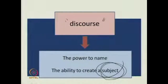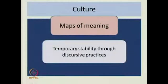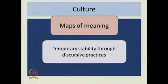So we talk about subjectivity as the topic of the first lecture in module 2. Module 2 is devoted to key concepts. Culture as maps of meaning was seen under post-structuralism as achieving just a temporary stability through discursive practices, something that is not there once and for all.